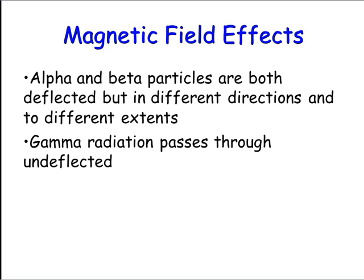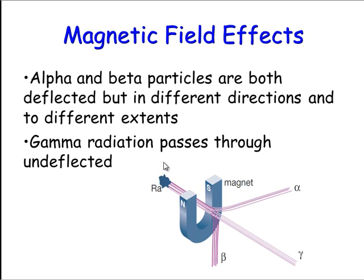Gamma radiation has no charge, so it should pass through undeflected. Looking at that diagrammatically — gamma rays pass through a magnetic field without any deflection. Beta rays deflect to the right, while alpha particles deflect left and also deflect twice as far as the beta particles did.